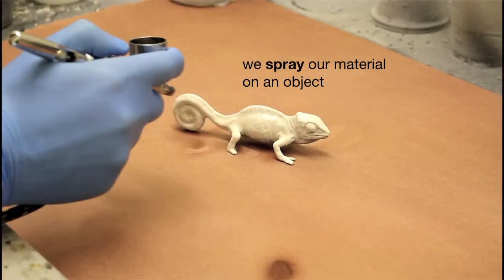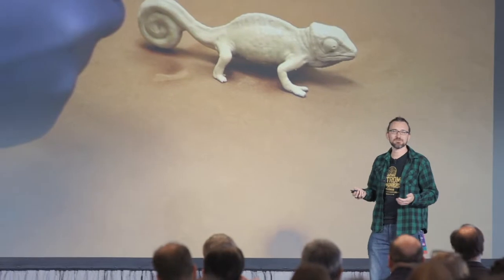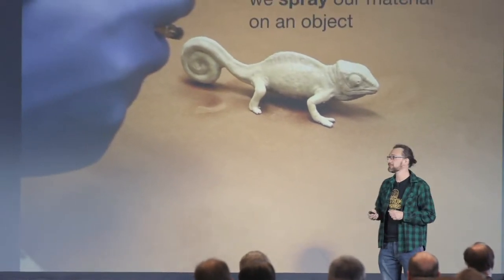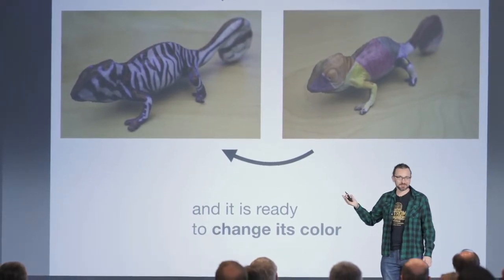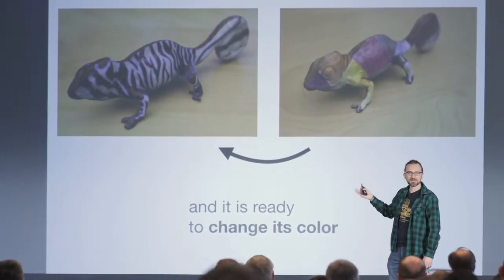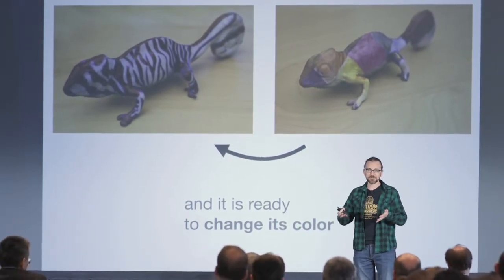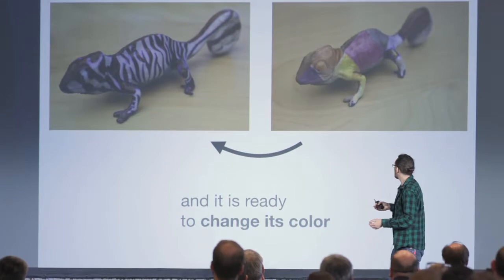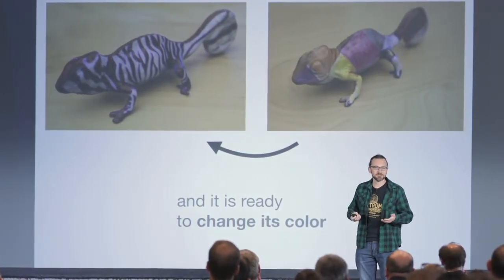What we did was we developed a color-changing material. This color-changing material is pretty much a coating, something that you can spray on pretty much any kind of object. It's actually based on a coating for cars that you can just spray on them. What you see here are two times the same object: on the left side, a zebra black-and-white pattern that we programmed on this material. Then we erased this entire color and reprogrammed it to have a more colorful, square-shaped pattern on its surface.